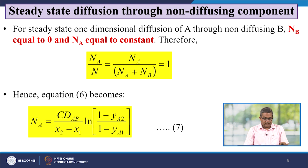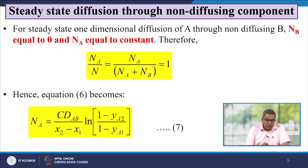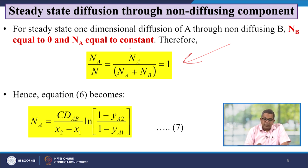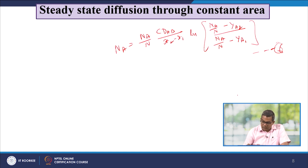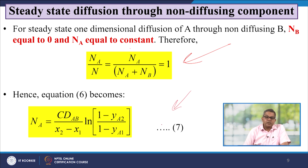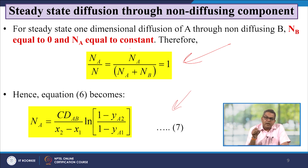For steady state one-dimensional diffusion of A through non-diffusing B, NB equals 0 and NA equals constant. Therefore, NA/N equals NA/(NA + NB) equals 1. Therefore equation number 6 becomes equation number 7: NA equals (C·DAB/(x2−x1))·ln[(1 − yA2)/(1 − yA1)].